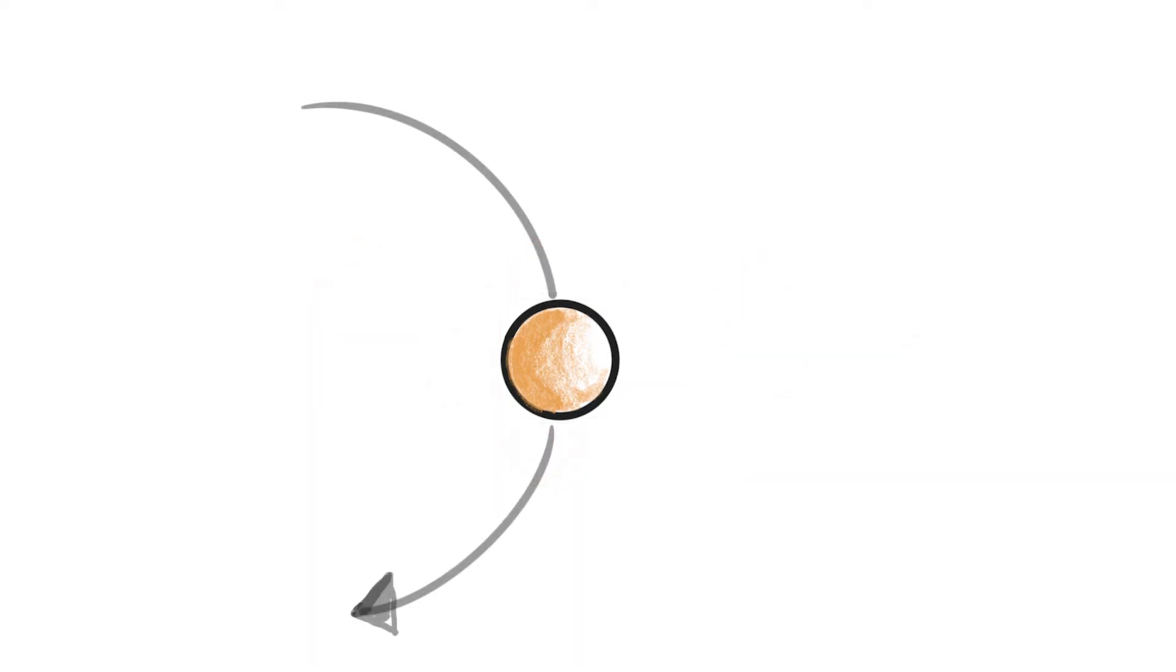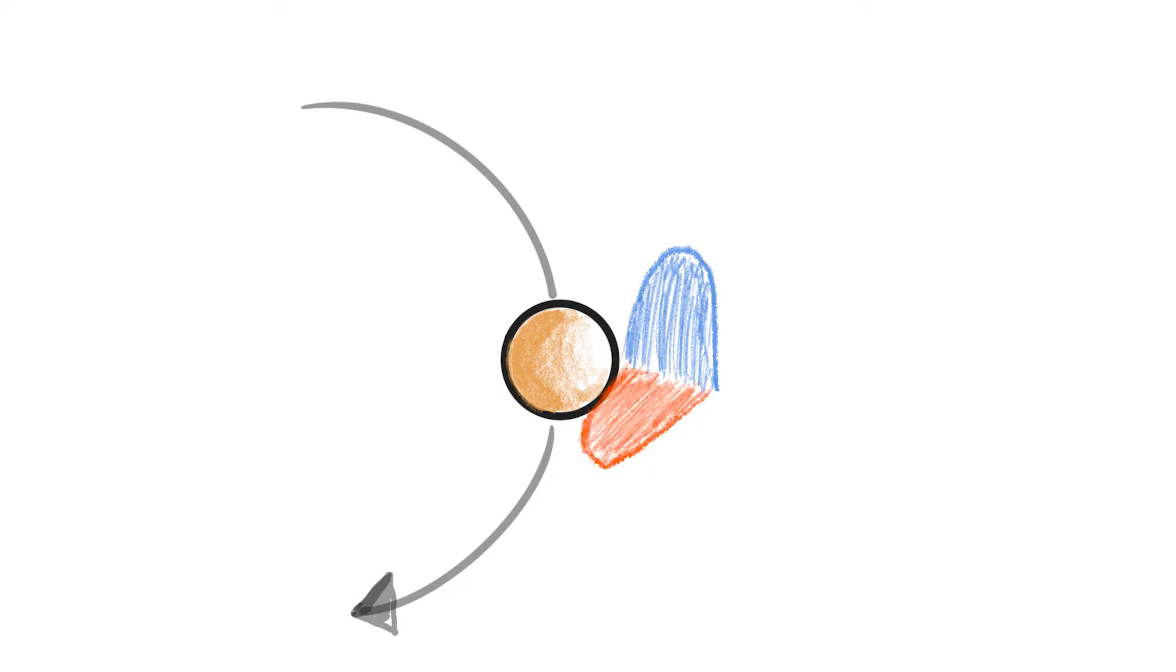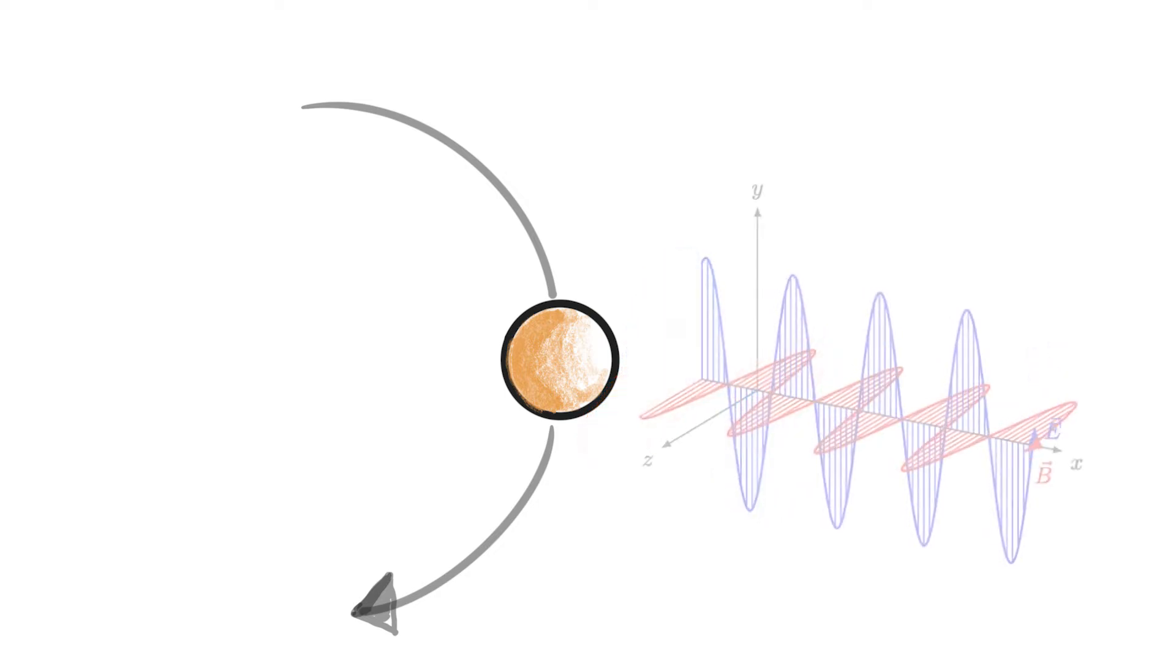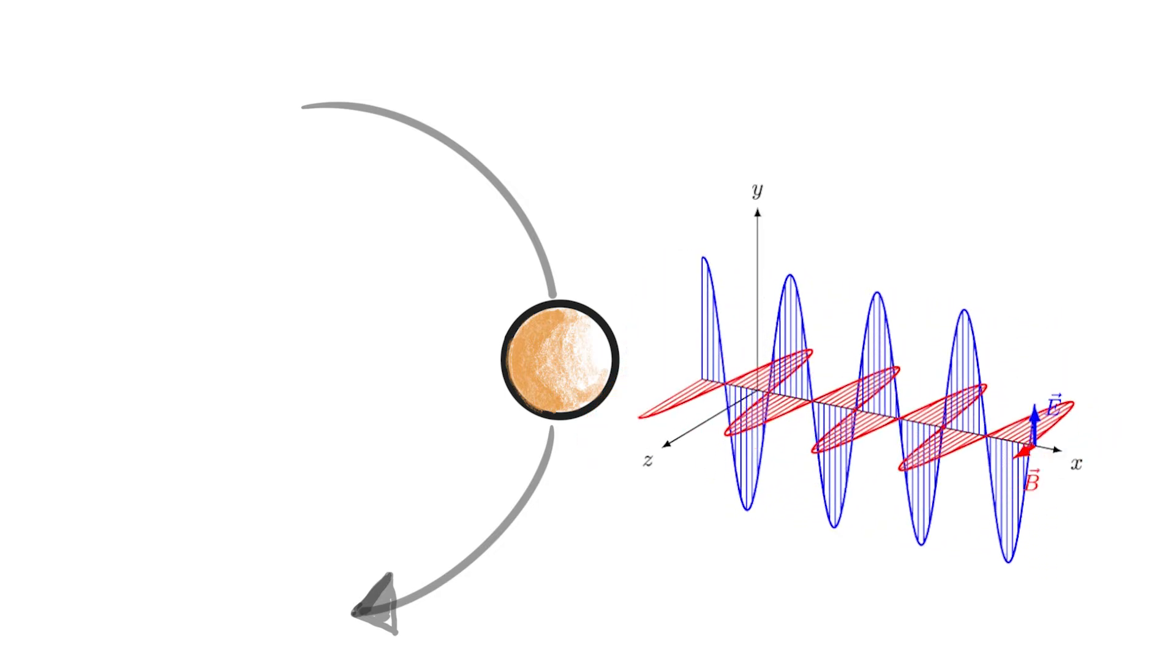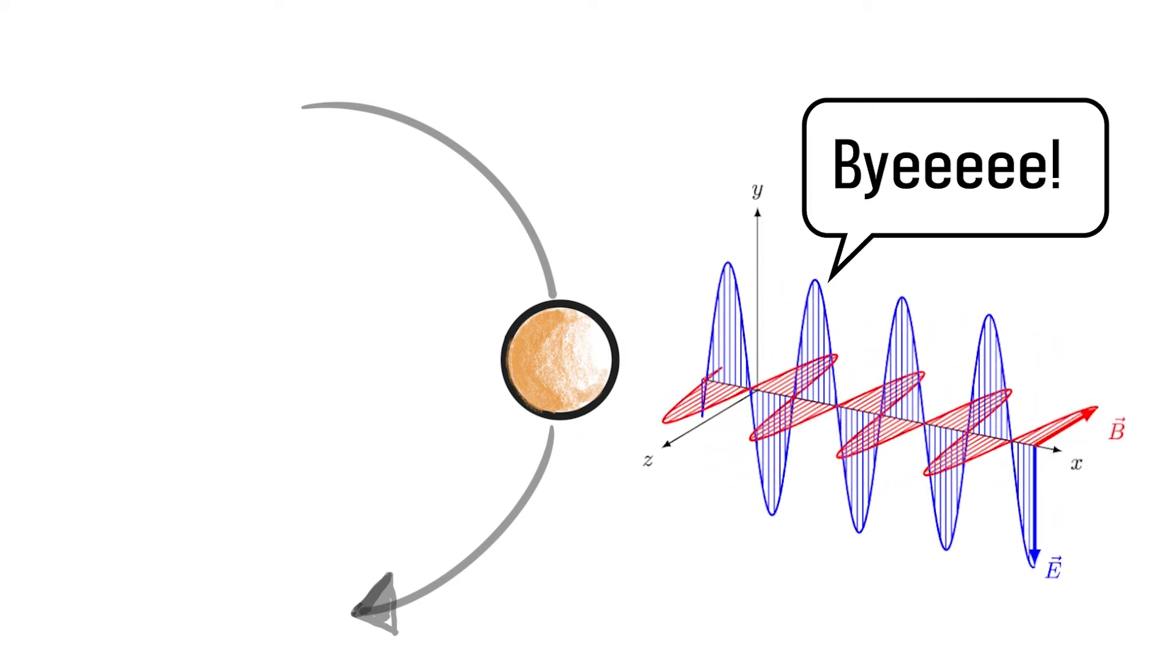If Charlie accelerates, so if Charlie changes speed or it changes direction, then it will cause a change in the electric field, which will then induce a change in the magnetic field. But then that change in the magnetic field will induce a change in the electric field. And this pairing of changing fields over and over again will repeat indefinitely. And it will peace out away from Charlie in what we call an electromagnetic wave.